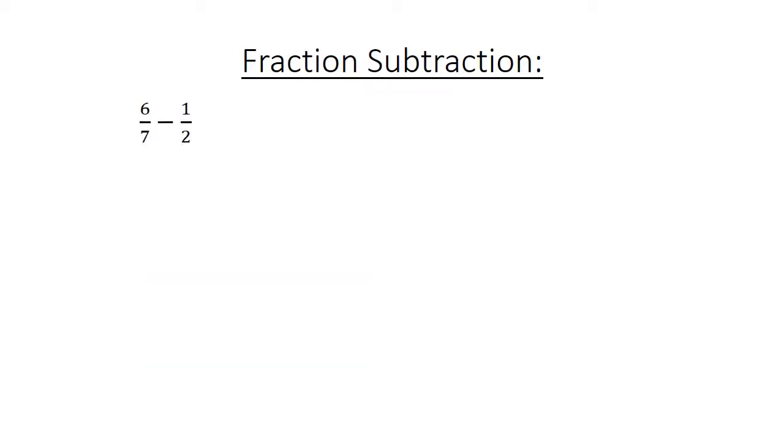Fraction subtraction. 6 over 7 minus 1 over 2. Find the lowest common multiple. 12 over 14 minus 7 over 14 equals 5 over 14.